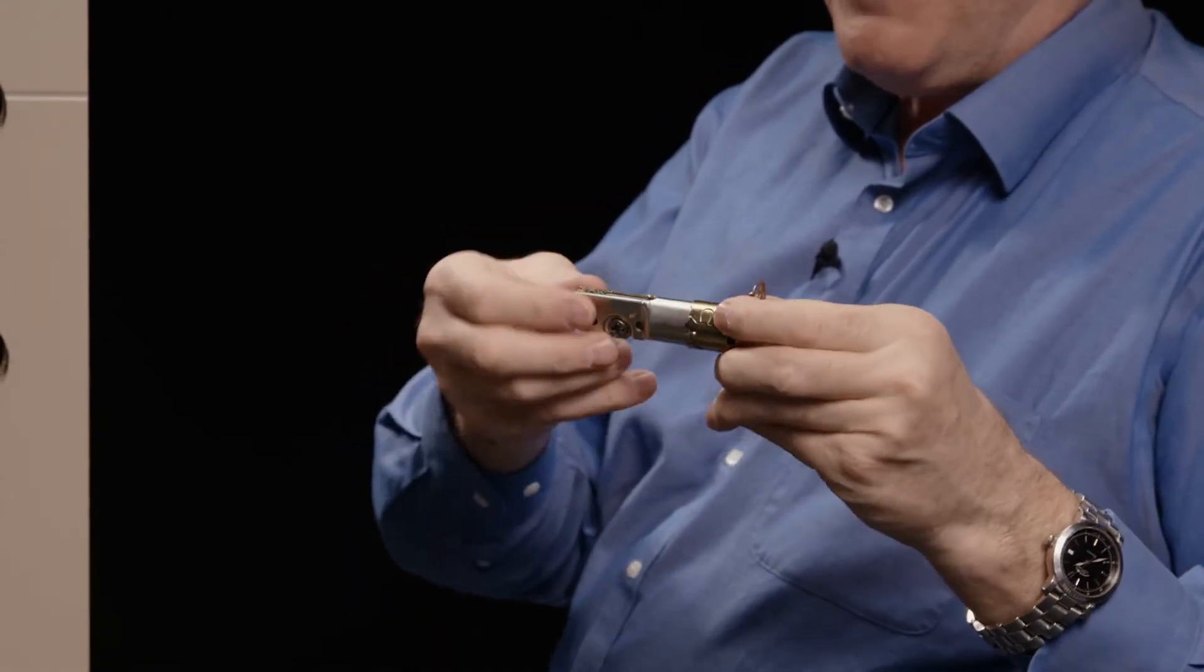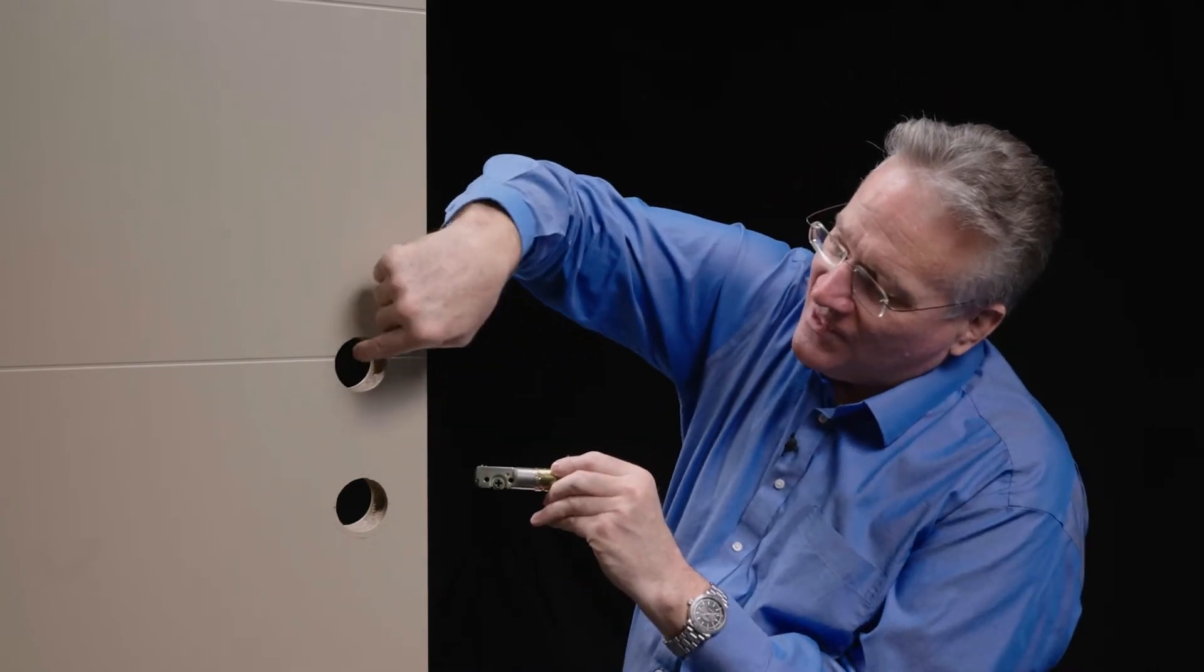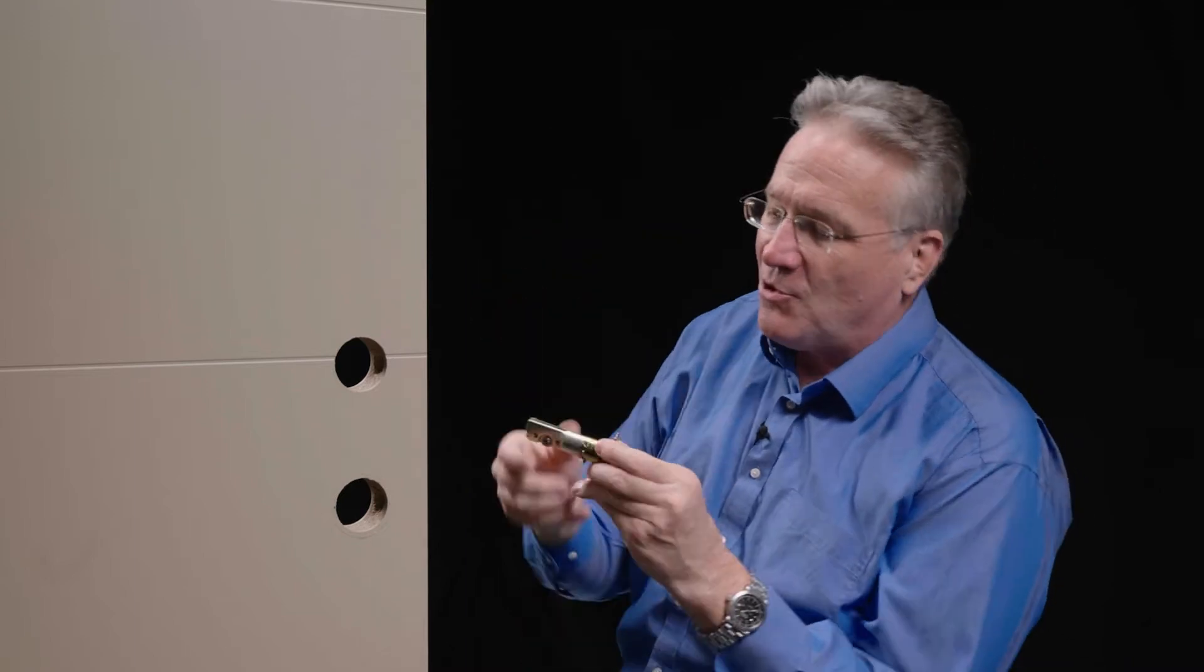This latch can be adjusted to fit in a 2 3/8 door or a 2 3/4 borehole. 2 3/8 or 2 3/4 is the distance from the center of the borehole to the edge of the door. In this case, our door is 2 3/4 and the latch is ready to go for that.